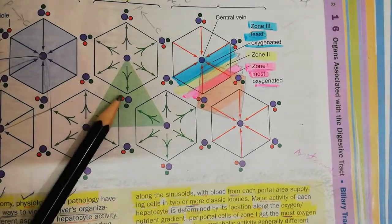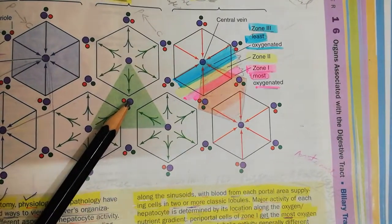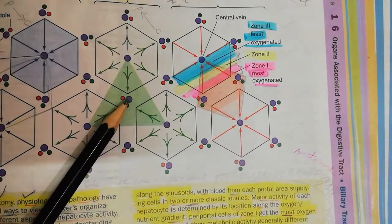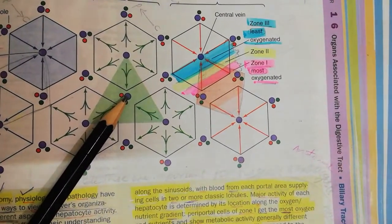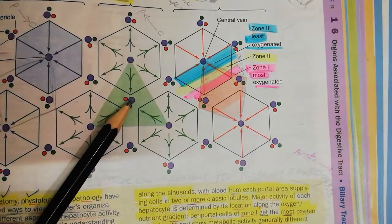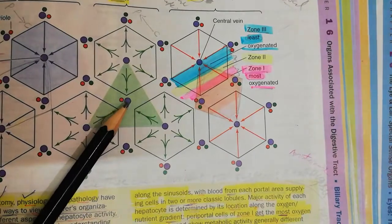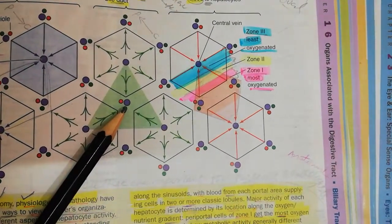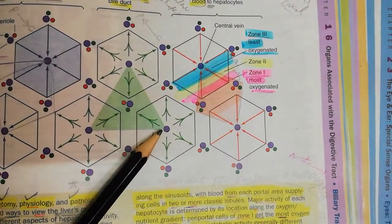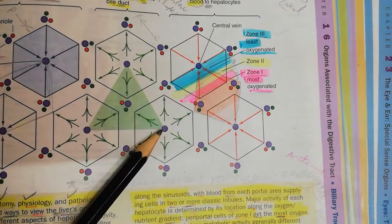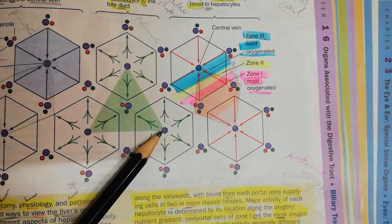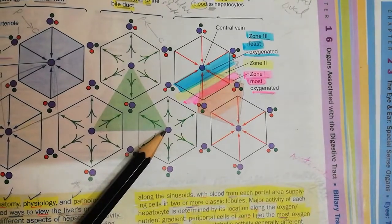Now come towards this portal lobule, which we consider when studying the exocrine function of the liver cells, that is its bile secretory function. Here, the portal area is in the very center and the three triangles are touching the central vein of these liver cells.